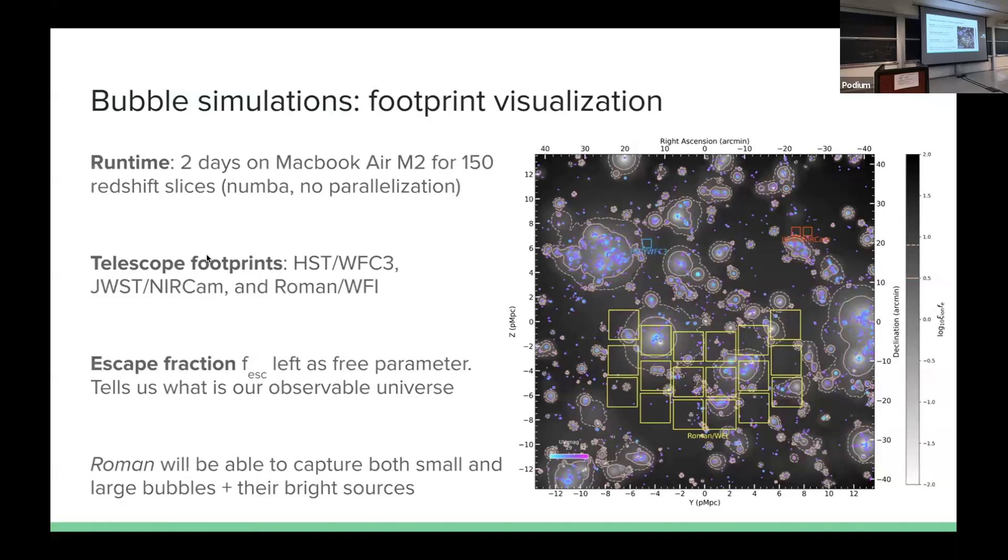The number 10 to minus 16 per centimeter squared is just a reference value I picked up from a reference of Roman. It would be great if we can push it at time by another factor of 10. If we can go down to 10 to minus 17, that's more or less the depths of 3D-HST, but 3D-HST is still a shallow grism survey for low mass galaxies.